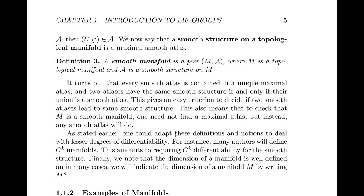As stated earlier, one could adapt all of these definitions and notions to deal with lesser degrees of differentiability. For instance, many authors will define C^k manifolds. This amounts to requiring C^k differentiability for the smooth structure. And finally, we should note that the dimension of a manifold is well defined, and in many cases will indicate this by writing M^n rather than M. Alright, that's all for now, and I'll see you next time.